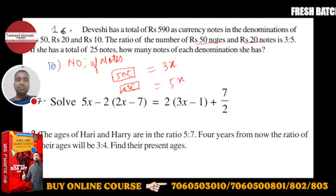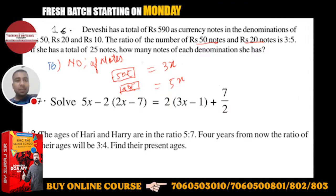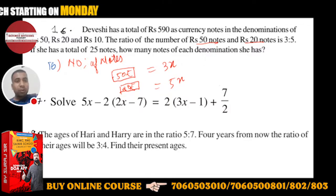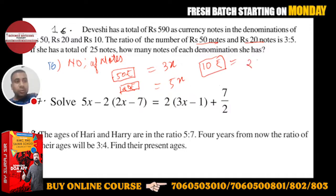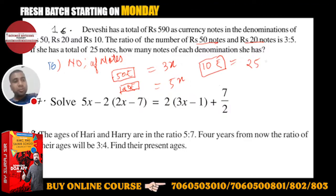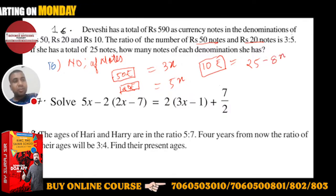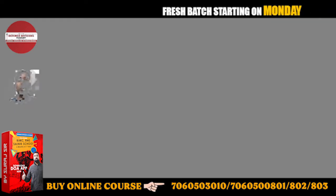And total notes are 25 notes. So there are 50 and 20, so 10 rupees notes - how many 10 rupees notes? Total notes plus 50 rupees, so 25 minus 8x will give you 10 rupees notes.